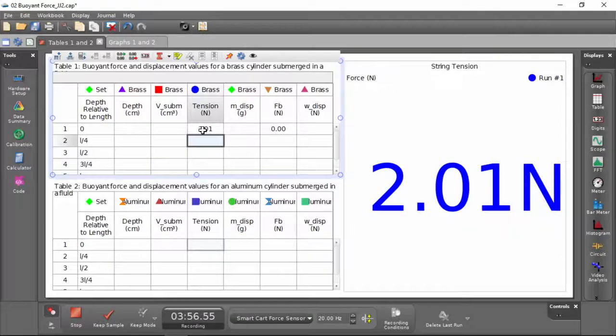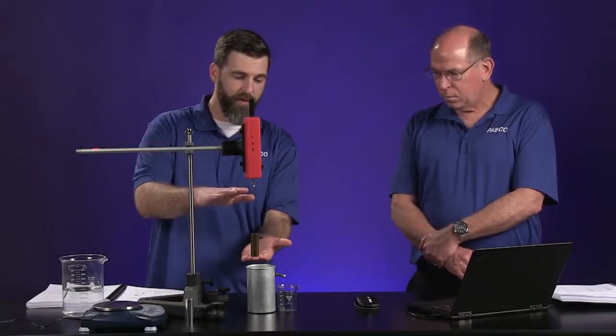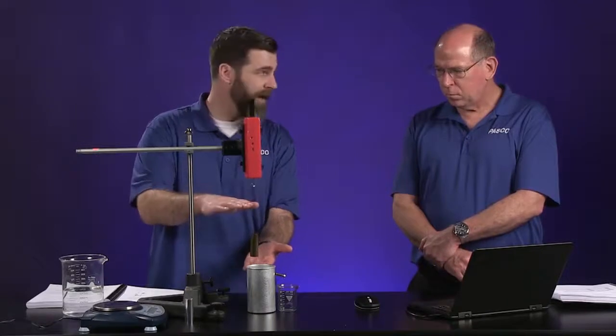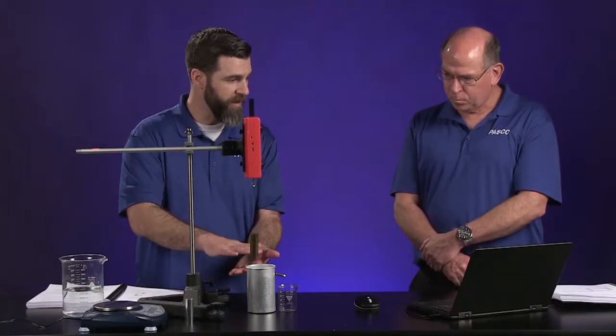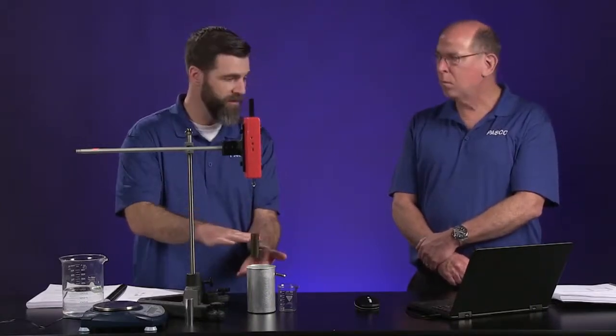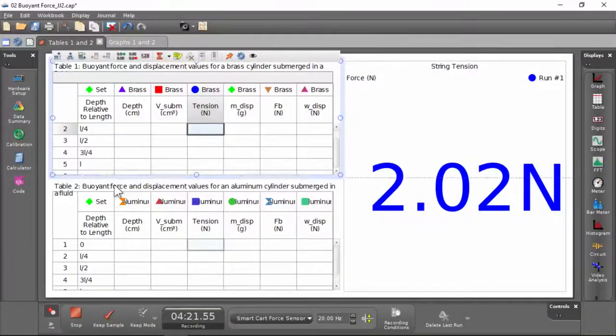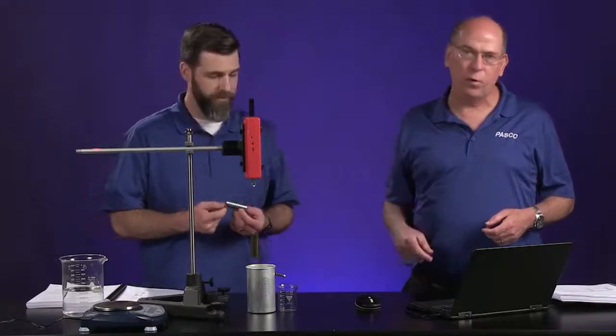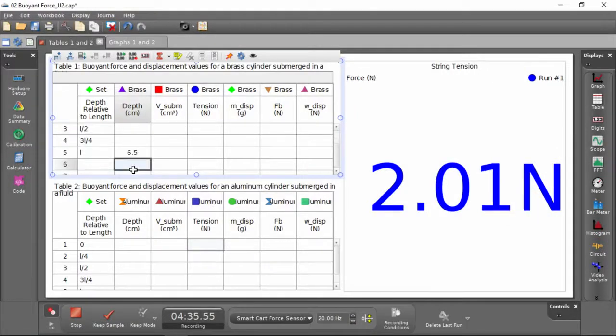Now it says here in the data table we're going to submerge it one quarter its length. In the experiment, we're going to collect one, two, three, four, five data points: one when it's not submerged at all, we have that; one when it's a quarter; one when it's half submerged; three quarters; and then completely submerged. So we'll need to know that total length, and I'll enter that in the data table as the depth when the whole thing is submerged. Each one of these cylinders is 6.5 centimeters, so I'll enter that.